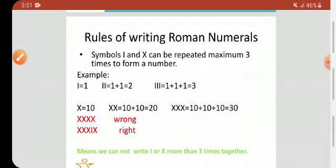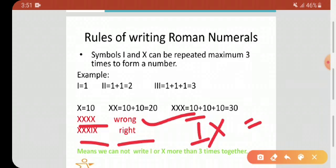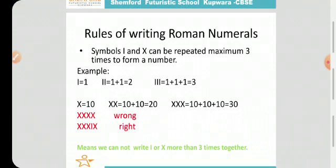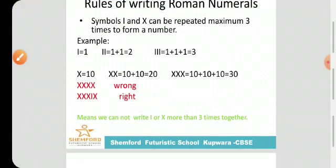As I have already told you, we cannot use more than 3 times I and X. Here, if we write XXXX, 4 times X, that is wrong. If we write XXXIX, that is right. Means XXX, that is 10 plus 10 plus 10, that's equal to 30. And IX indicates 10 minus 1, that's equal to 9. This one is correct. Means we cannot write I and X more than 3 times.